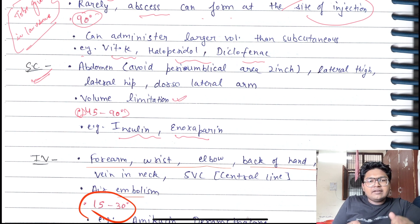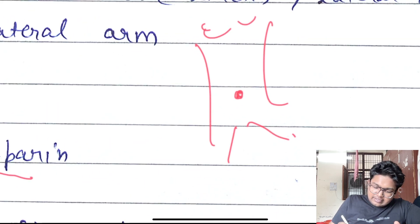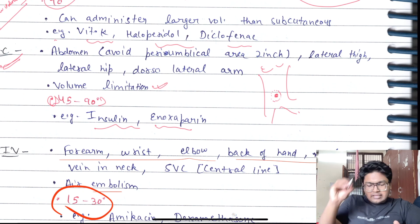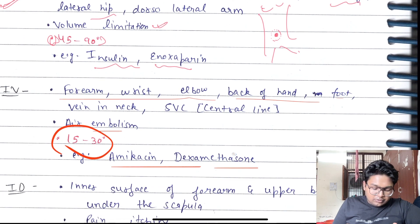Abdomen - we can give it in abdomen, avoid peri-umbilical area about 2 inches. Like this is your stomach, this is umbilicus. We do not give injection at this site, about 2 inches of umbilicus. Lateral thigh, lateral hip, dorsolateral arm we can use.